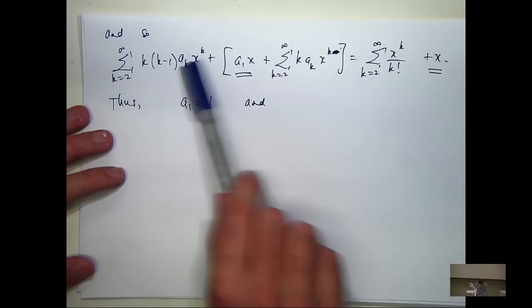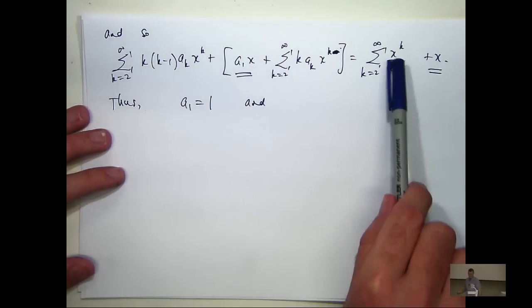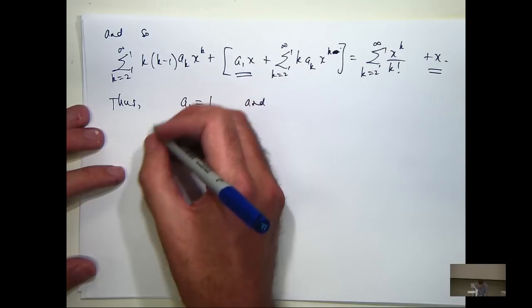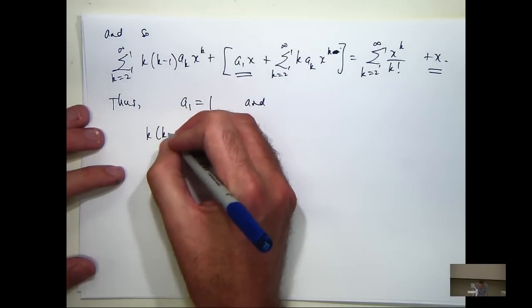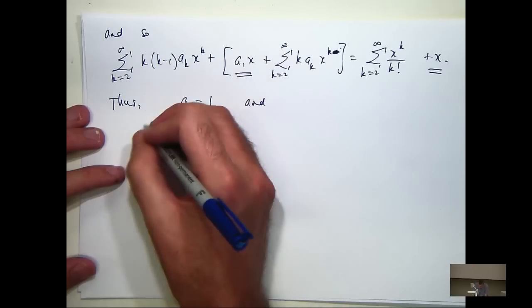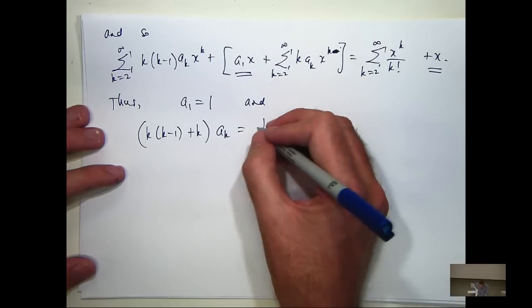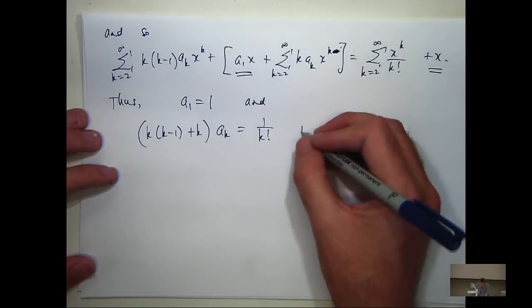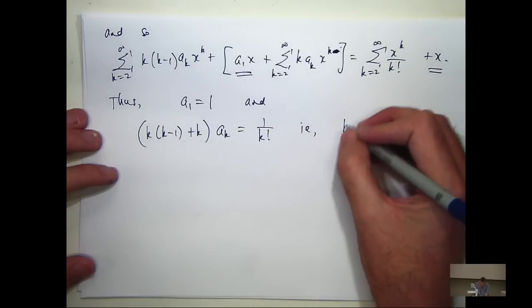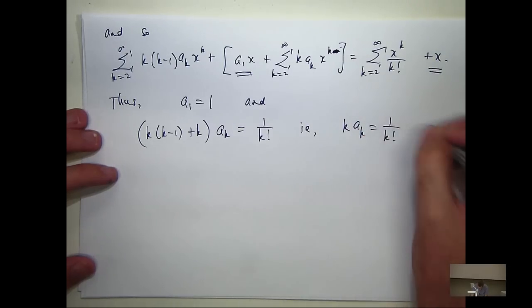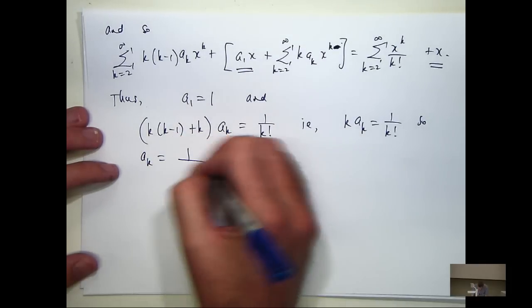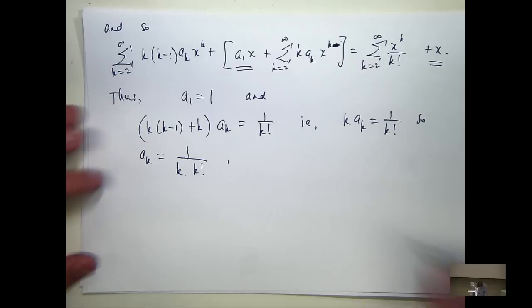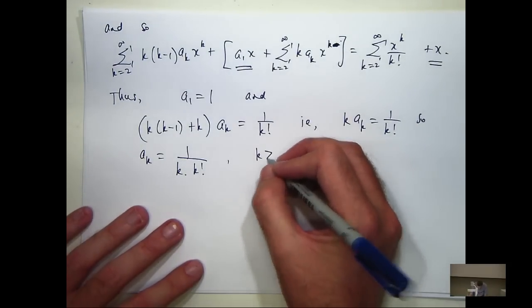Now, if I sort of join this sum up with this sum, then what do I get? I've got a common factor of A sub k, and over here, I've got 1 on k factorial. So I can just clean up here, and I'm going to get k A sub k equals 1 on k factorial. So A sub k is just 1 on k times k factorial. Now, I already know what A1 is.